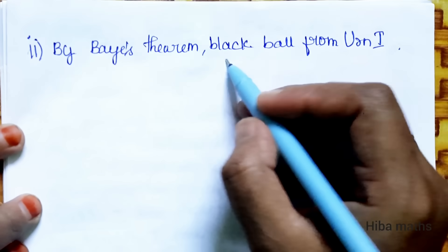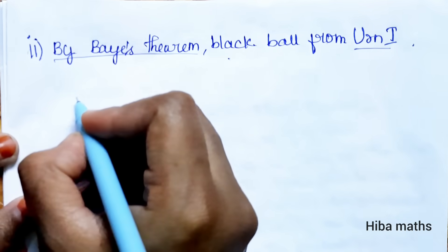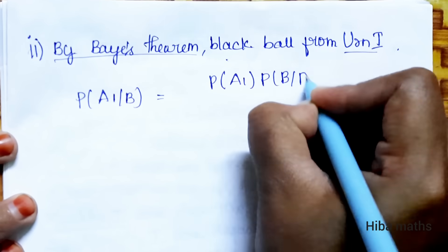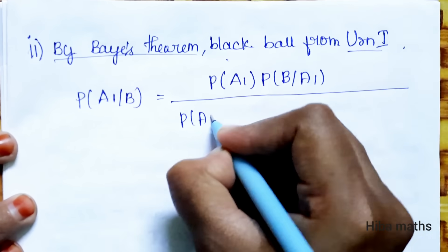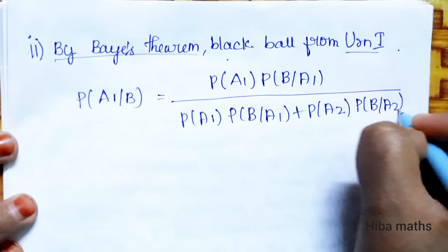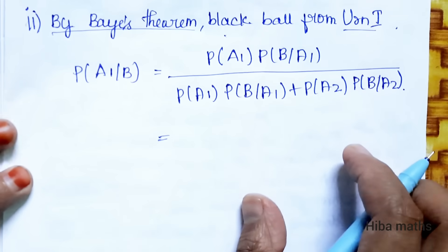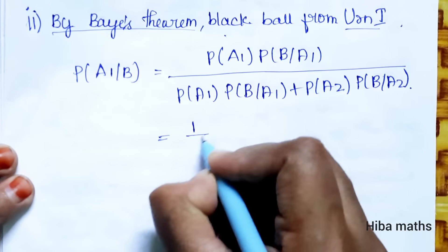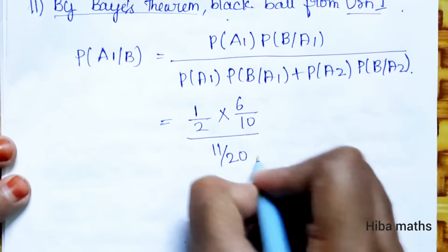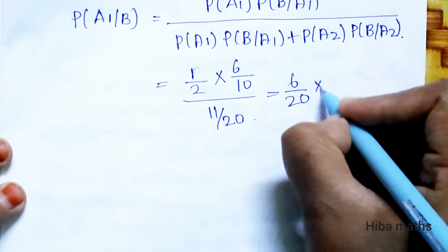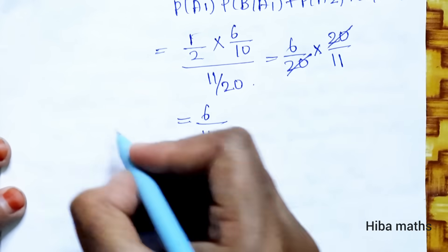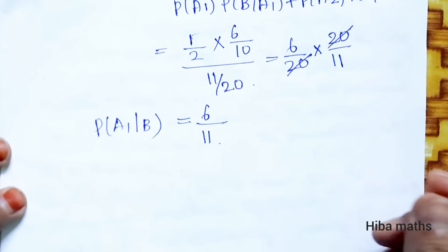For the second condition: given that the ball is black, find P(A1|B). Using Bayes' theorem: P(A1|B) equals P(A1) times P(B|A1) divided by P(B), which equals (1/2)(6/10) divided by 11/20, giving the final value. Thank you so much for watching.